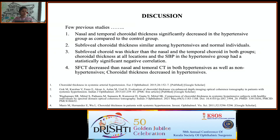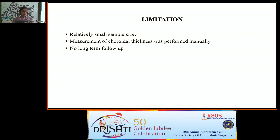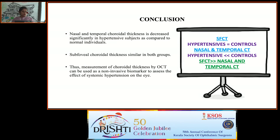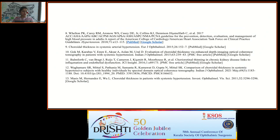A few past studies had similar results. Limitations included a relatively small sample size, manual measurement of choroidal thickness, and no long-term follow-up. We concluded that sub-foveal choroidal thickness is similar in both hypertensives and controls, while nasal and temporal choroidal thickness is significantly reduced in hypertensives. Measurement of choroidal thickness by OCT can be used as a non-invasive biomarker to assess the effect of systemic hypertension on the eye.